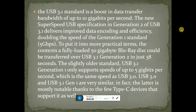The slightly older standard, USB 3.1 Generation 1, supports speeds up to 5 Gbps, which is the same speed as USB 3.0. USB 3.0 and USB 3.1 Generation 1 are very similar — the latter is most notable for supporting USB-C type devices as well. Please subscribe and like my videos.